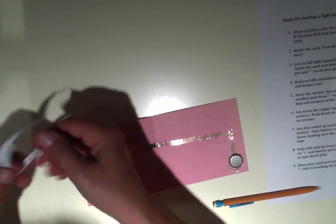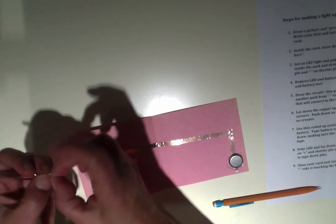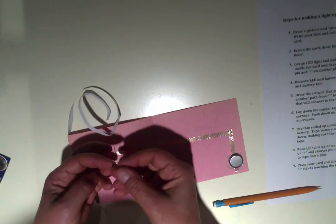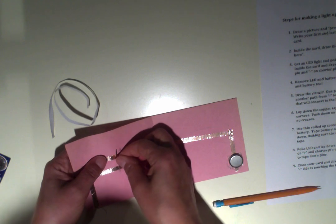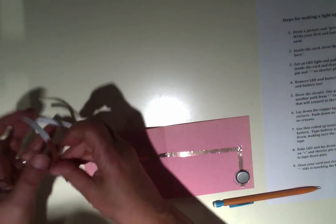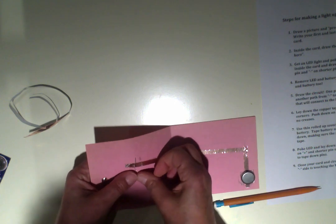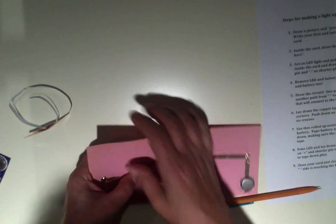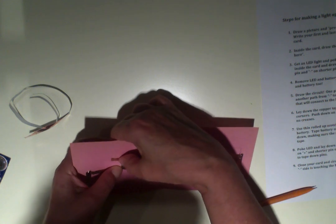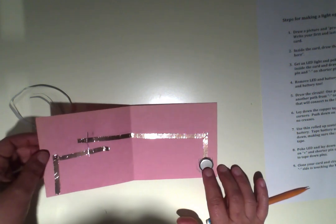So I'm going to take a little bit more copper tape and put one on either side to secure it. Just take a small piece like this and put it right on top. And just press it down. And on this side, I'll do the same. And press it down. Now, last thing is we're going to close the circuit and see if it works.